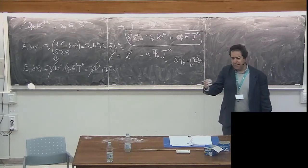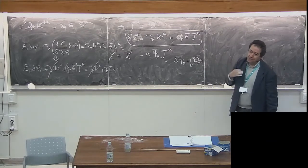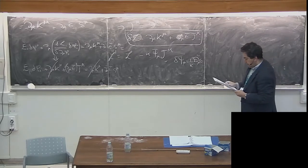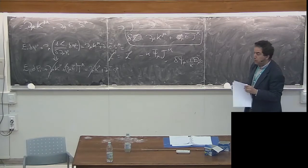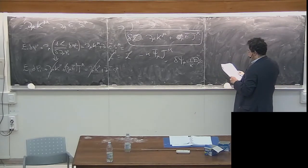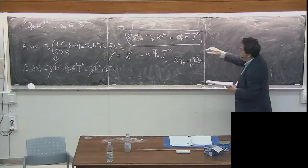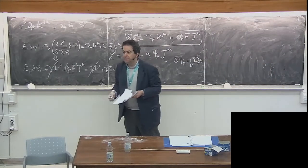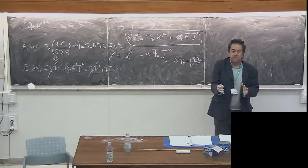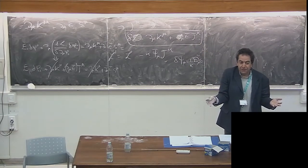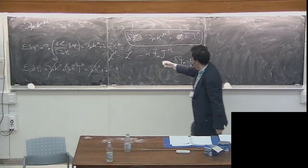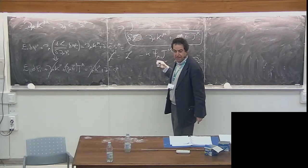At each step, the variation of the new terms cancels the problematic terms from the previous order. We end up with a supersymmetric Lagrangian — you can prove that the Noether method converges. If we apply this method to the global action we have written before, we end up with a locally supersymmetric theory. We are adding psi_mu, so we also need to add the kinetic term for psi_mu — the Rarita-Schwinger term — just as for ordinary gauge theories.